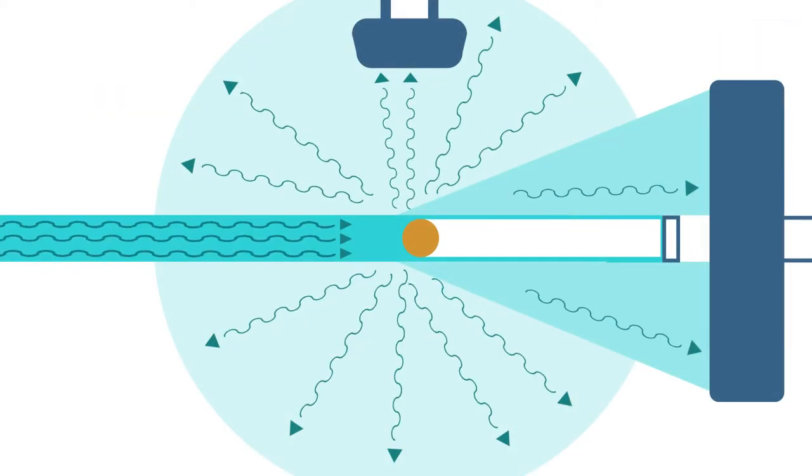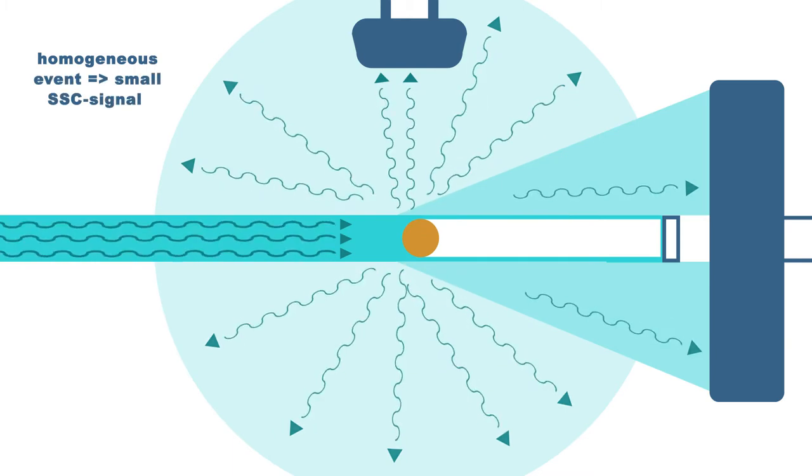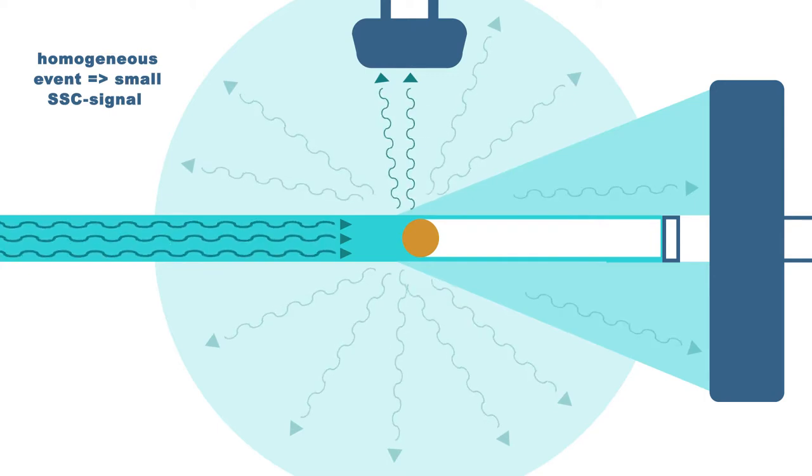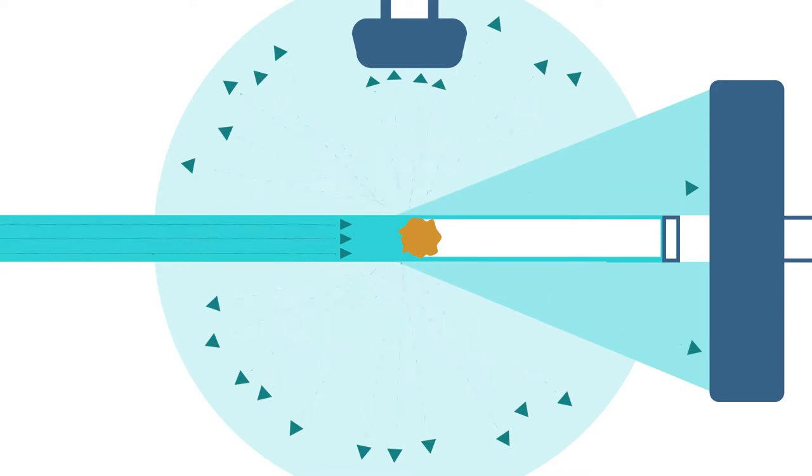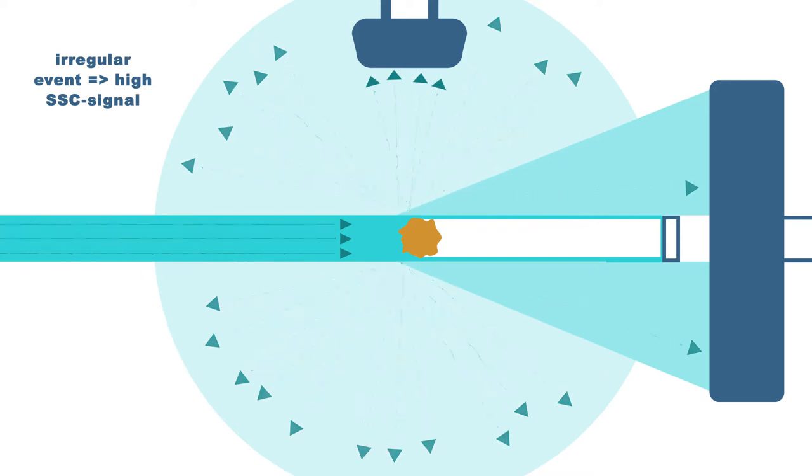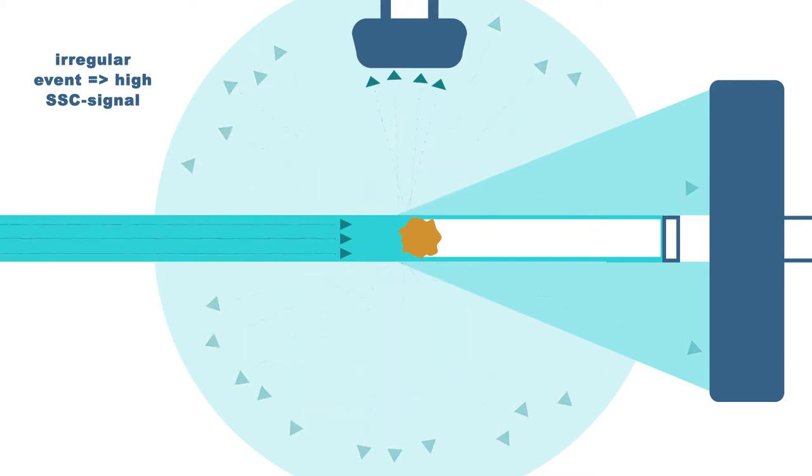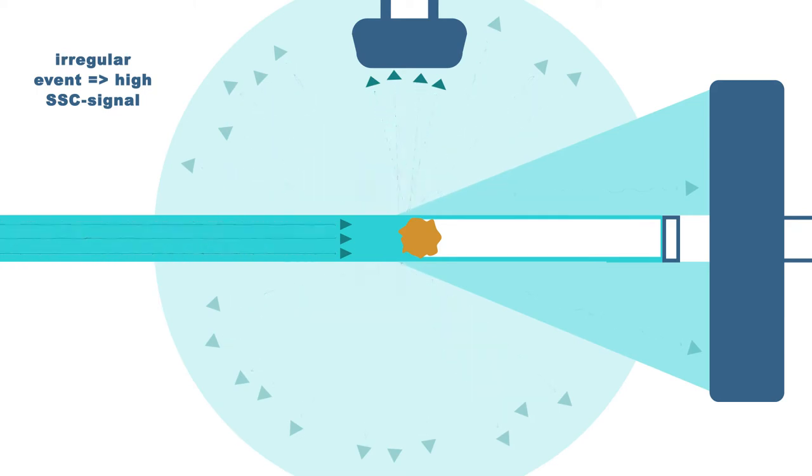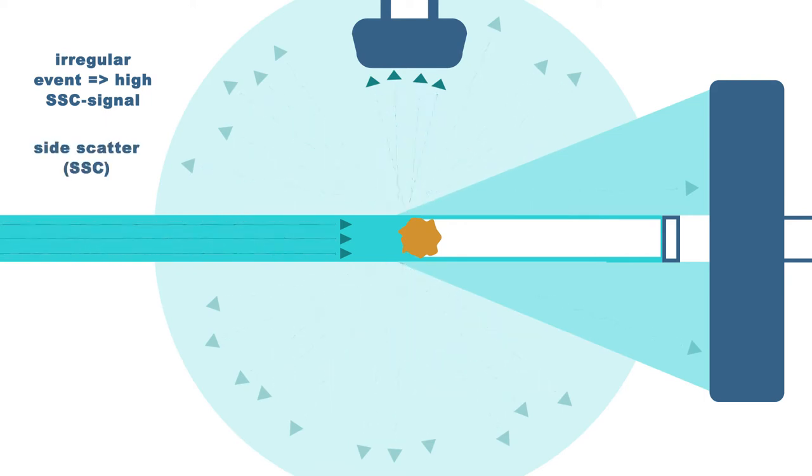If an event is homogeneous, both internally and externally, only a small signal for side scattered light will occur. There will be less diffraction and scattering interactions. In this case, less light intensity will reach an additional detector placed at a 90 degree angle to the laser beam. If the event is irregularly structured at its surface and inside, there will be strong diffraction and scattering interactions. However, the wavelength will be unaffected. In flow cytometry terminology, this signal is named side scatter. The abbreviation is SSC.